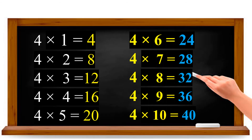Now shall we read the 4 table? Come on, say along with me. 4 ones are 4. 4 twos are 8. 4 threes are 12. 4 fours are 16. 4 fives are 20. 4 sixes are 24. 4 sevens are 28. 4 eights are 32. 4 nines are 36. 4 tens are 40. Are you clear with the 4 table?